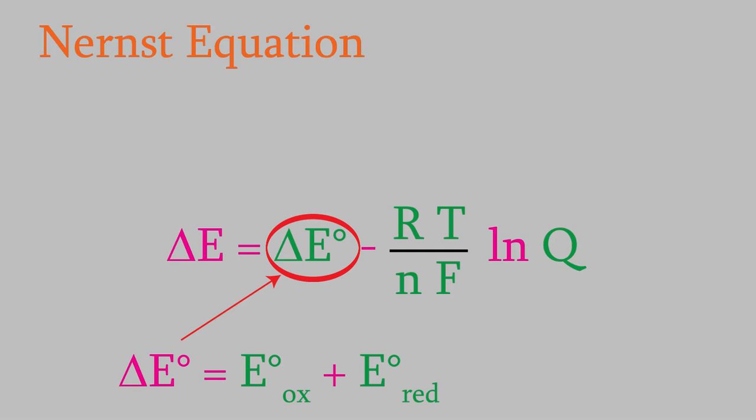If you've forgotten how to do this, you might want to review that video. You already know that R is the gas law constant, which is 8.314 joules per kelvin mole. T is the temperature. N is the number of electrons. And F is the Faraday constant.